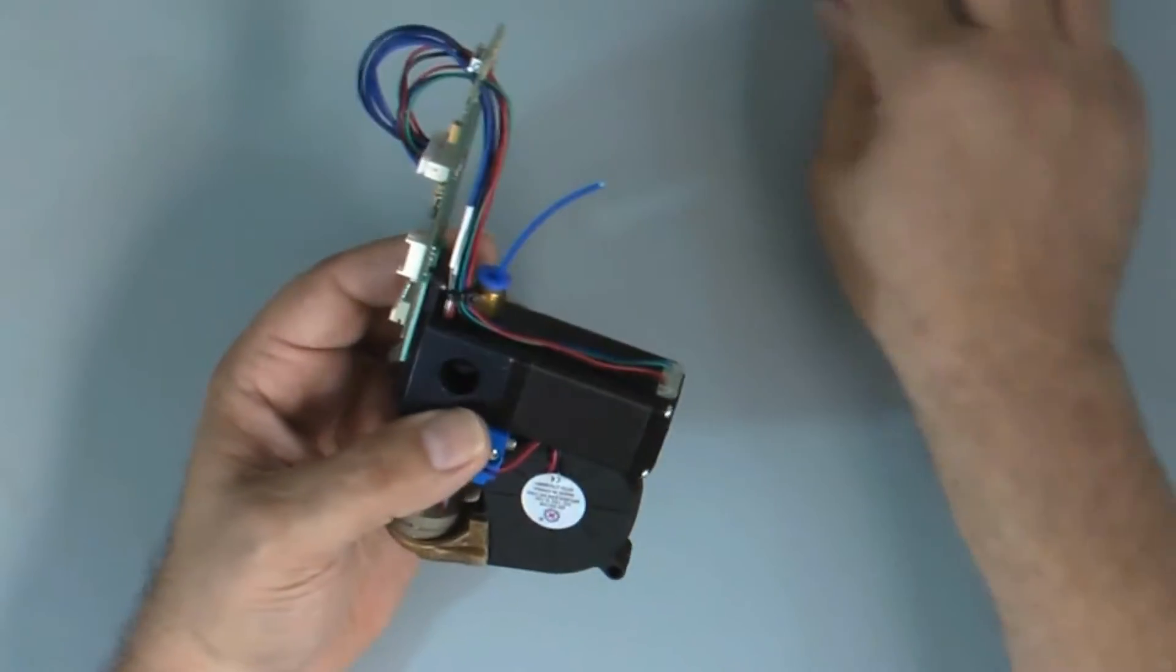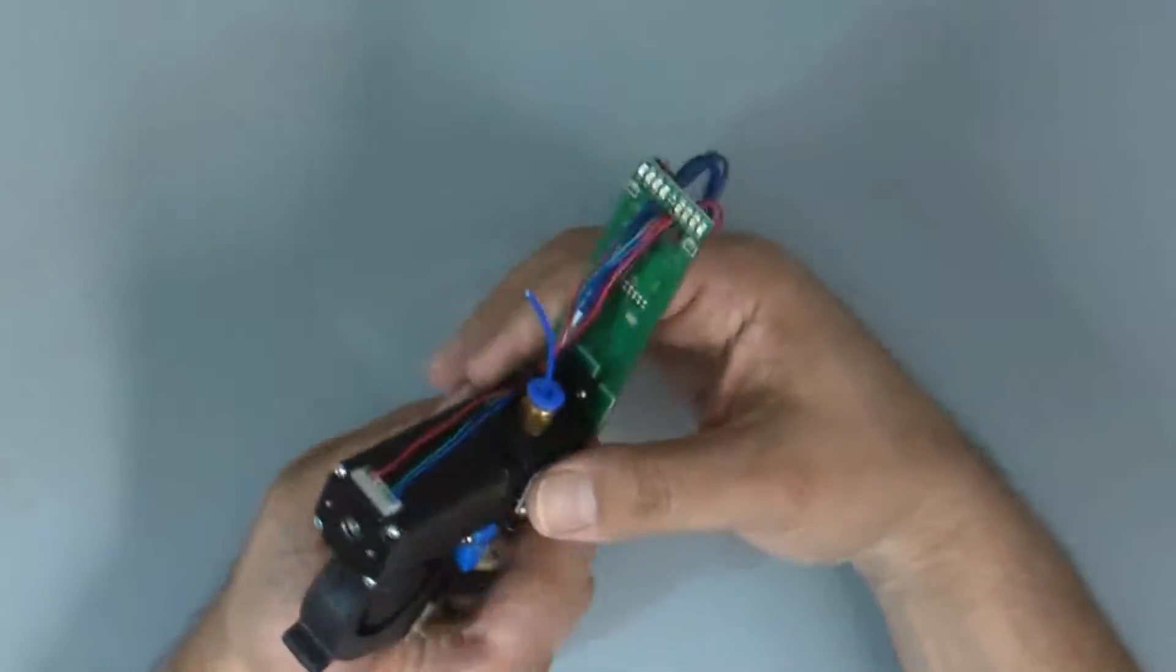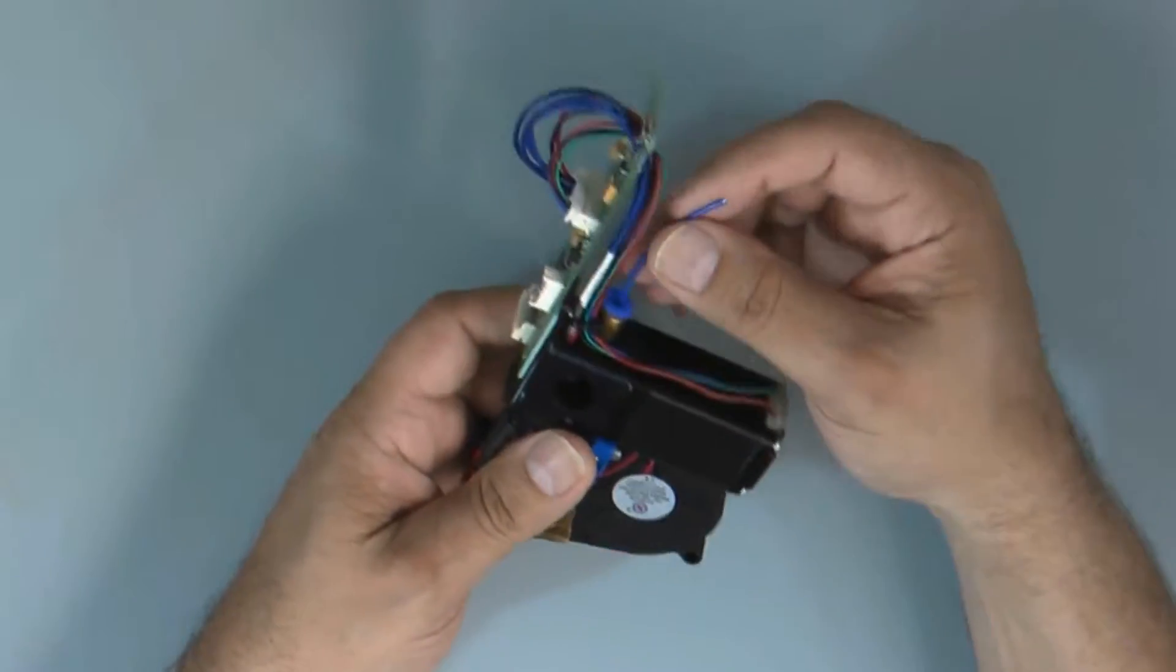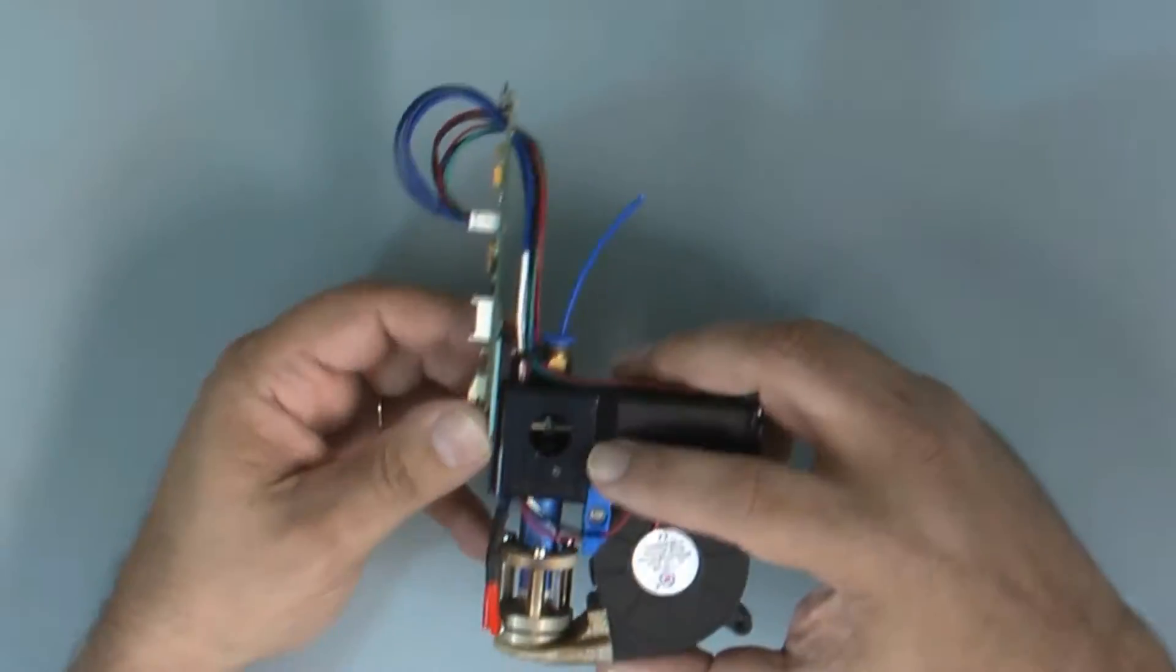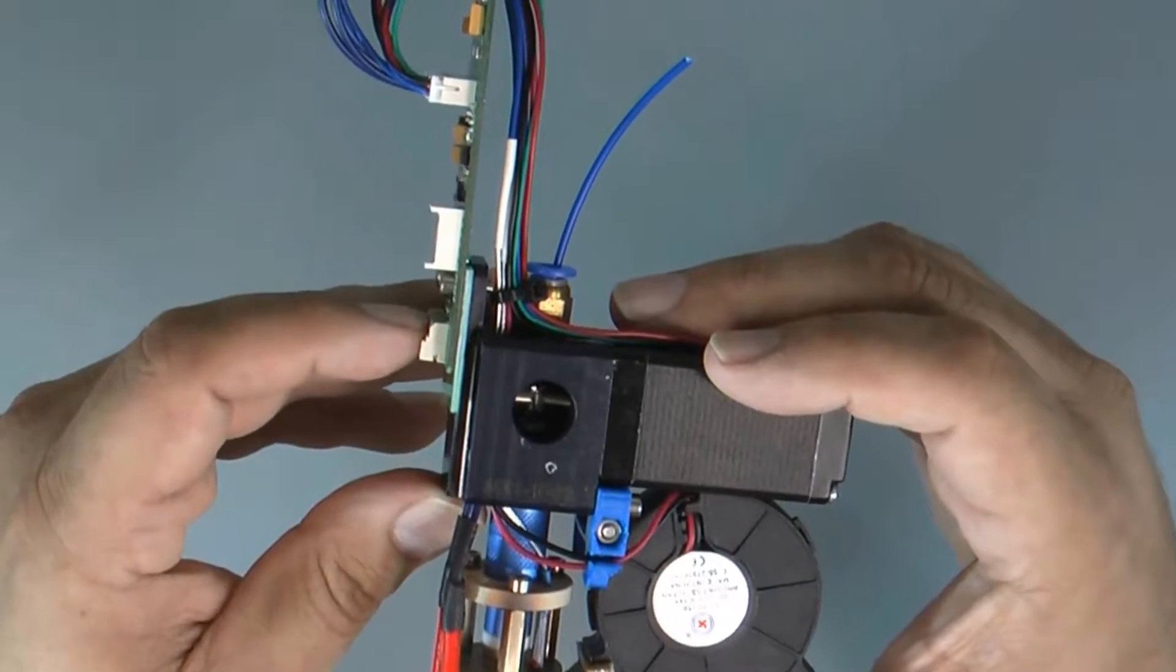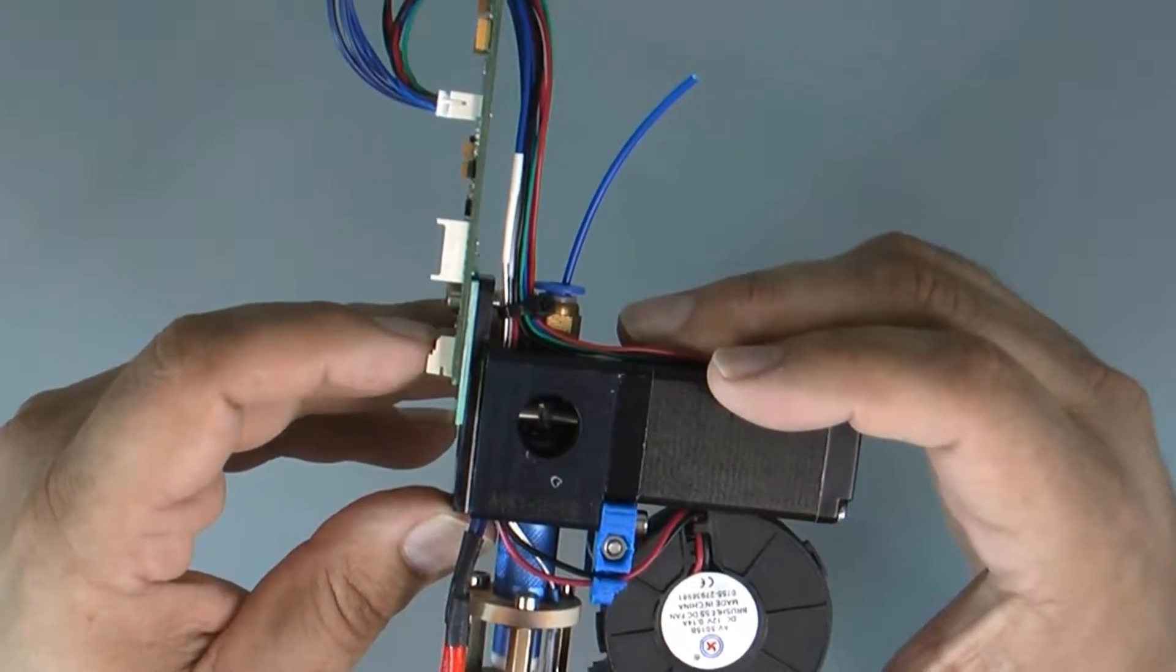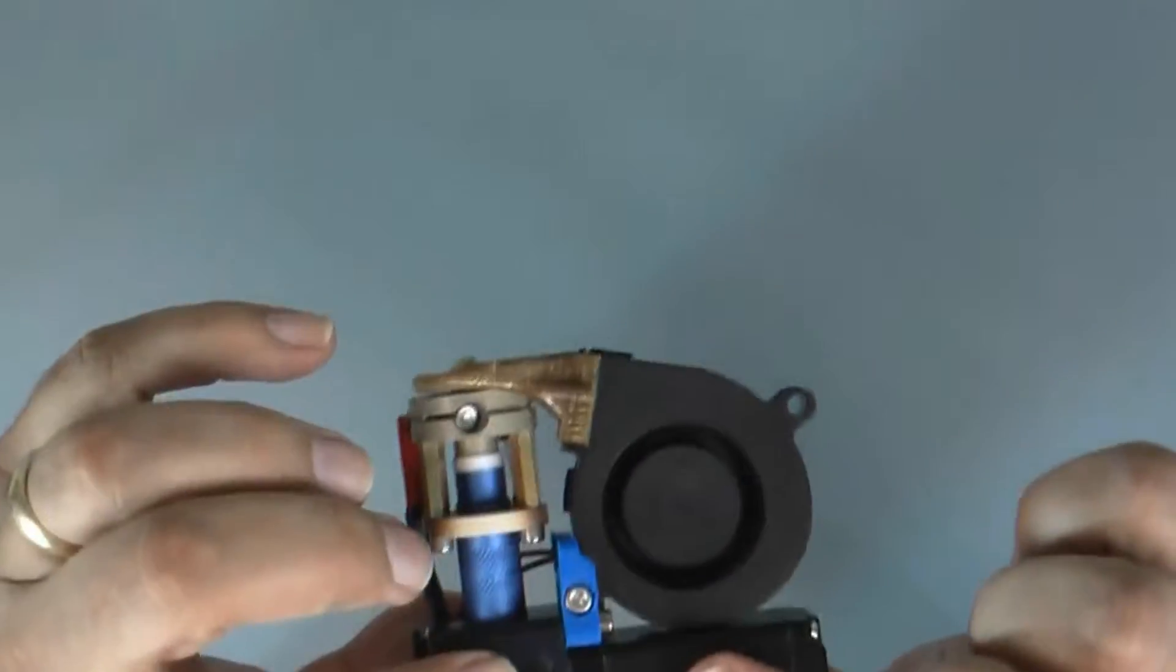Through this tube is going to be your 1.75 millimeter filament. In this case, I'm showing ABS. It goes through the fitting and into the feed chamber. So here it's going to be on the other side of that drive shaft, and this is the motor itself.